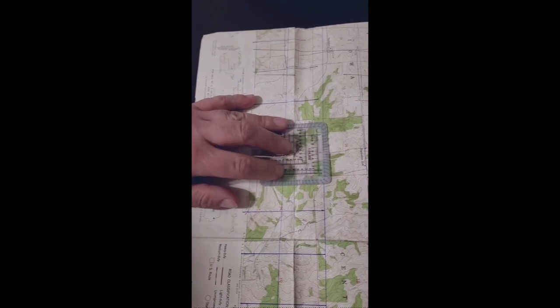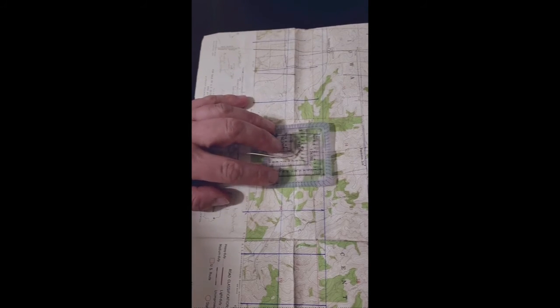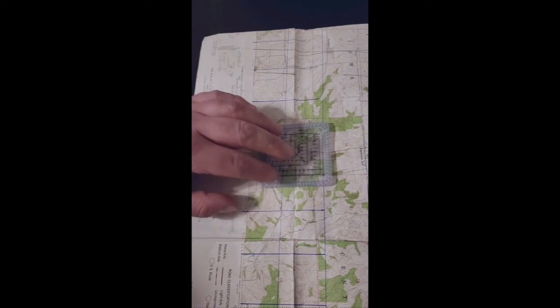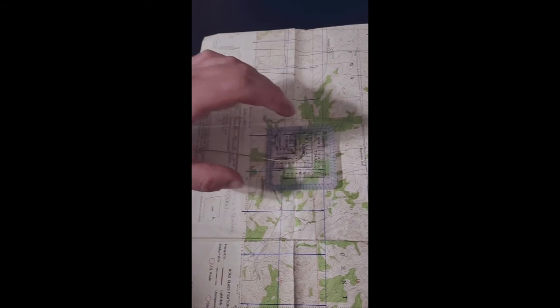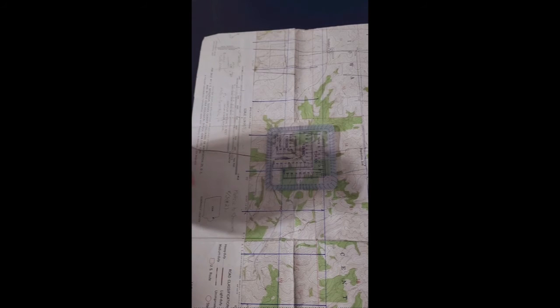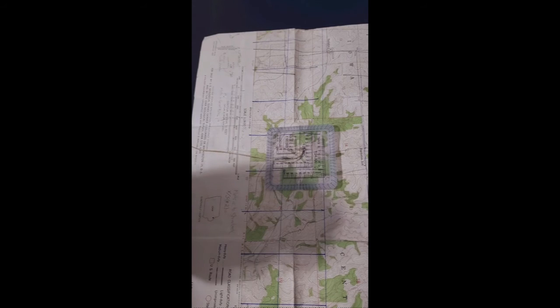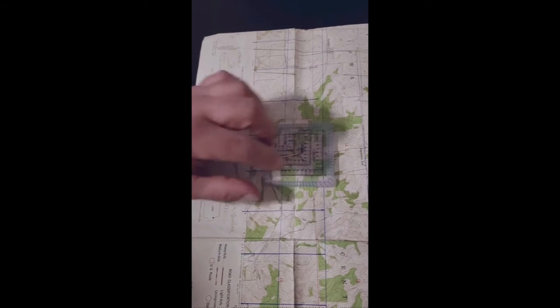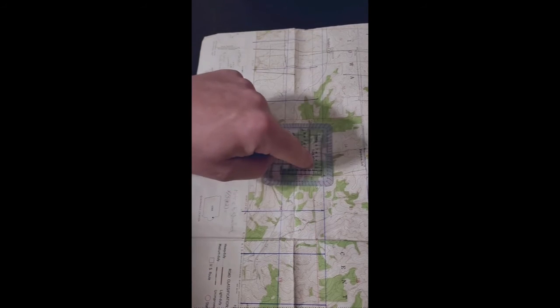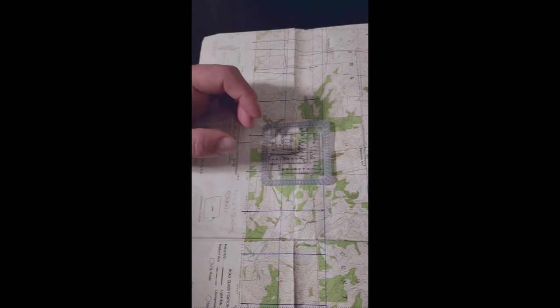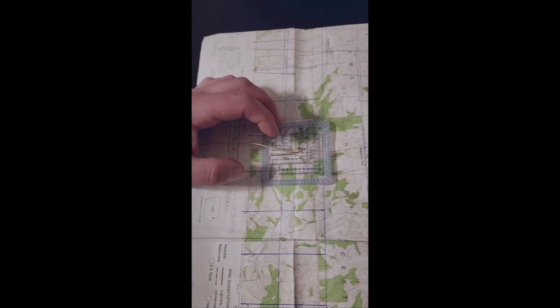Basically from there, what I'm actually going to be doing, and I think a lot of times people miss this out, is from this point once I find that grid, I'm basically just going to find the X and Y axes of how many meters I am north and east of where I'm at, off of this coordinate.